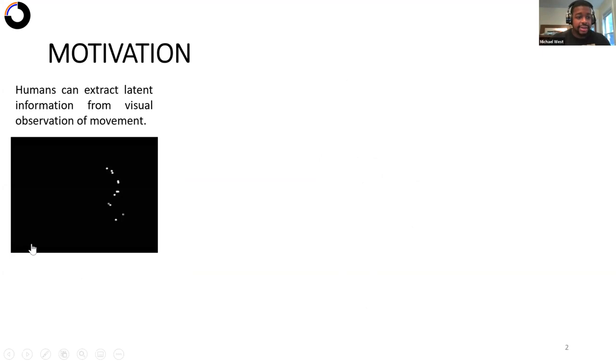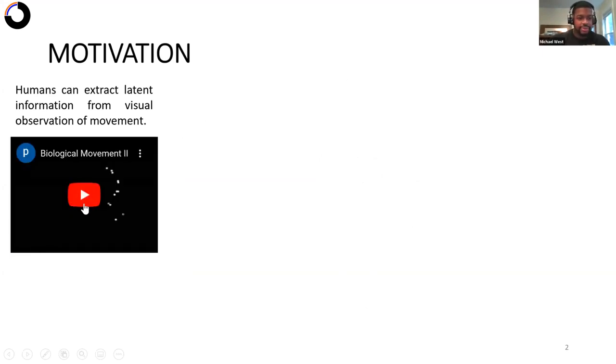So to motivate the idea of this project, humans have a very good ability to extract latent information from visual observation of biological motion. This is best shown in point light animations, where you can see in this video someone who is trying to jump, previously the person was walking, and climbing stairs as well.